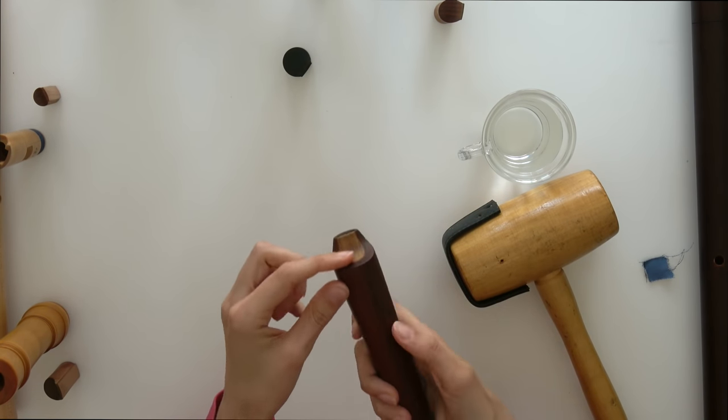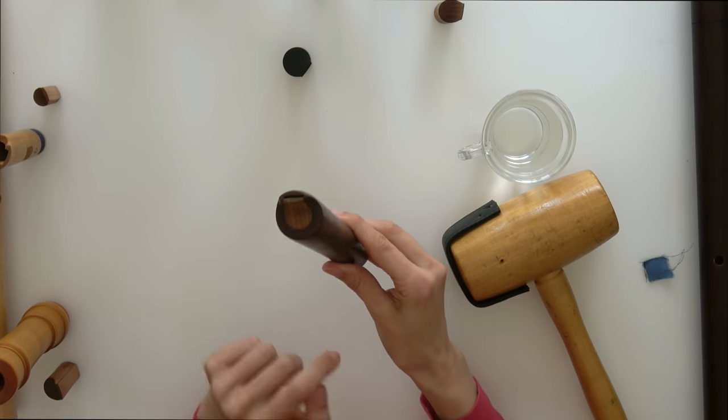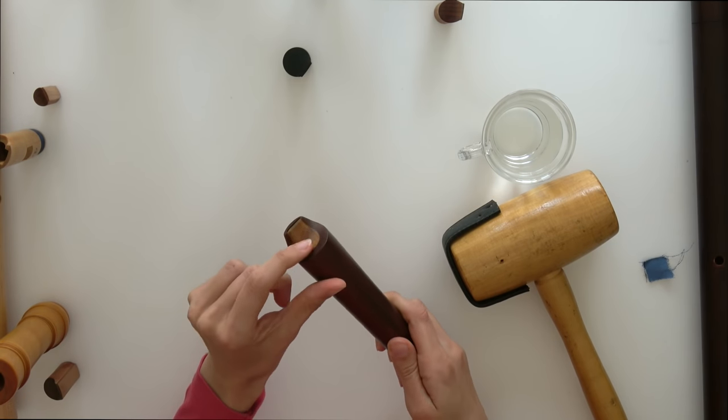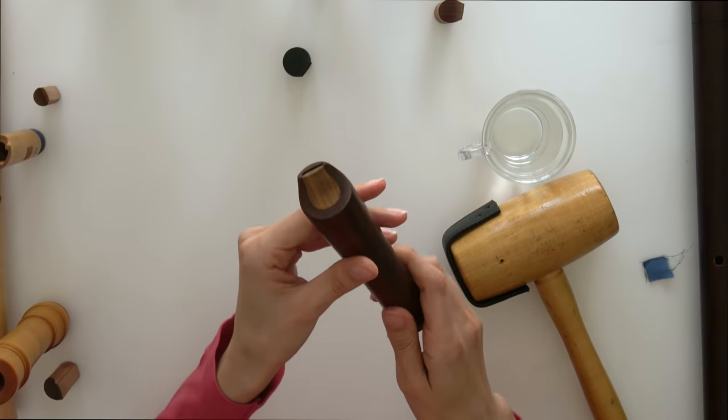In order to be sure, you have to feel the surface up here to see if the block is completely aligned with the surface of the head joint. If it's totally smooth, then you know it's in its place.